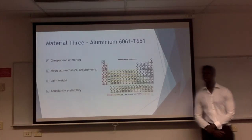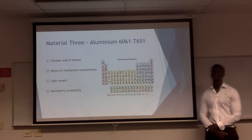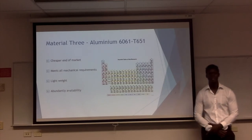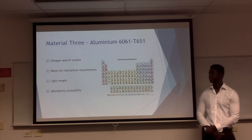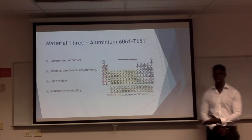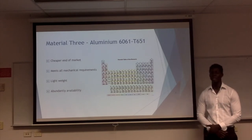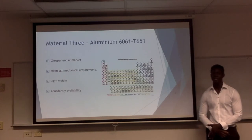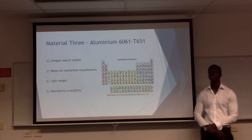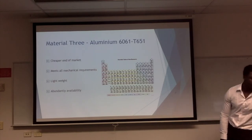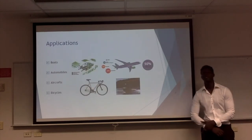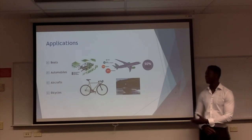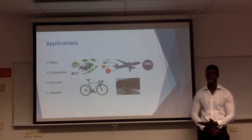Thank you Taylor. So material number three is aluminium 6061. This material is on the cheaper end of the market. It is mainly composed of magnesium, aluminium of course, and silicon. It is extremely lightweight and has all the mechanical properties we desire. In terms of availability, it is one of the most used materials across the world. Because of its exceptional mechanical properties, it is used in boats, aircraft, automobiles, and of course bicycles.